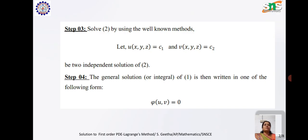Step 3: Solve equation 2 by using well-known methods. Let u(x,y,z) = c₁ and v(x,y,z) = c₂ be two independent solutions. The general solution of equation 1 is then written as φ(u,v) = 0.